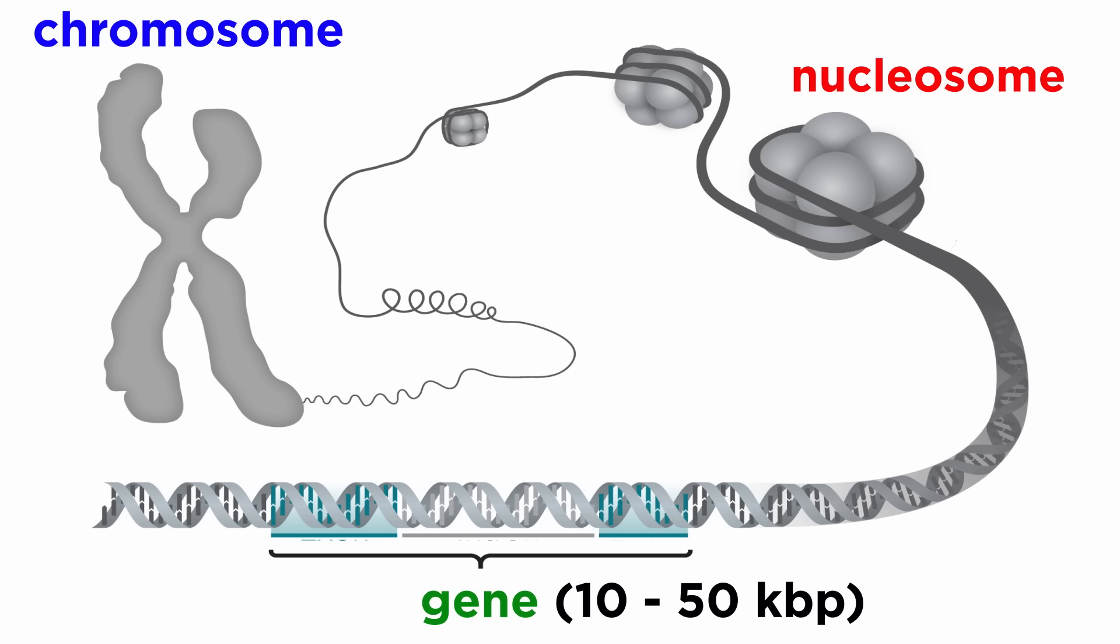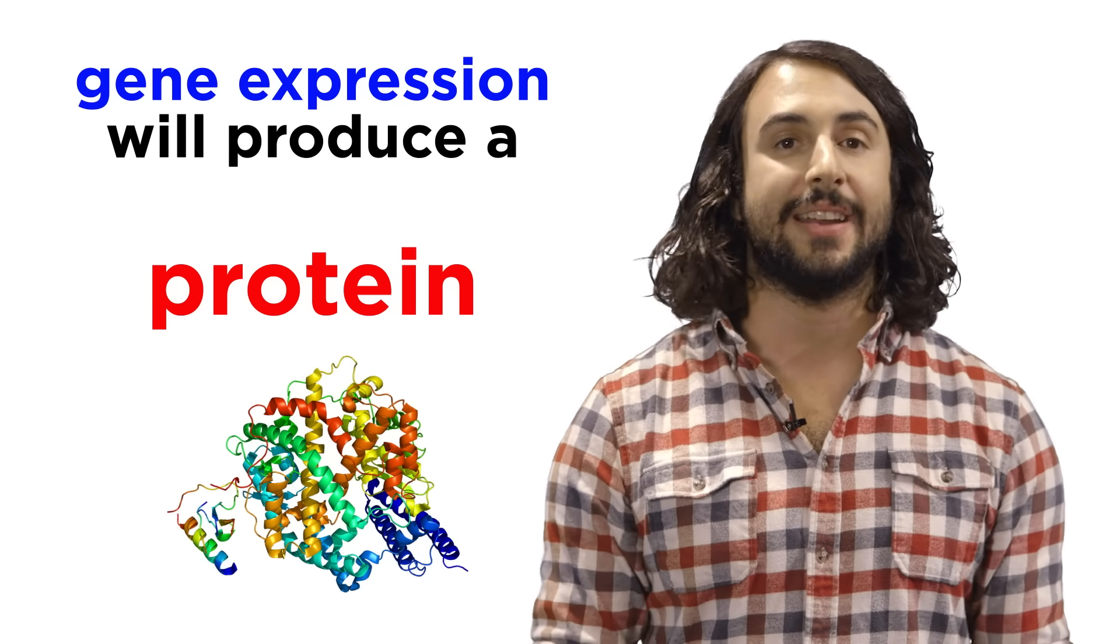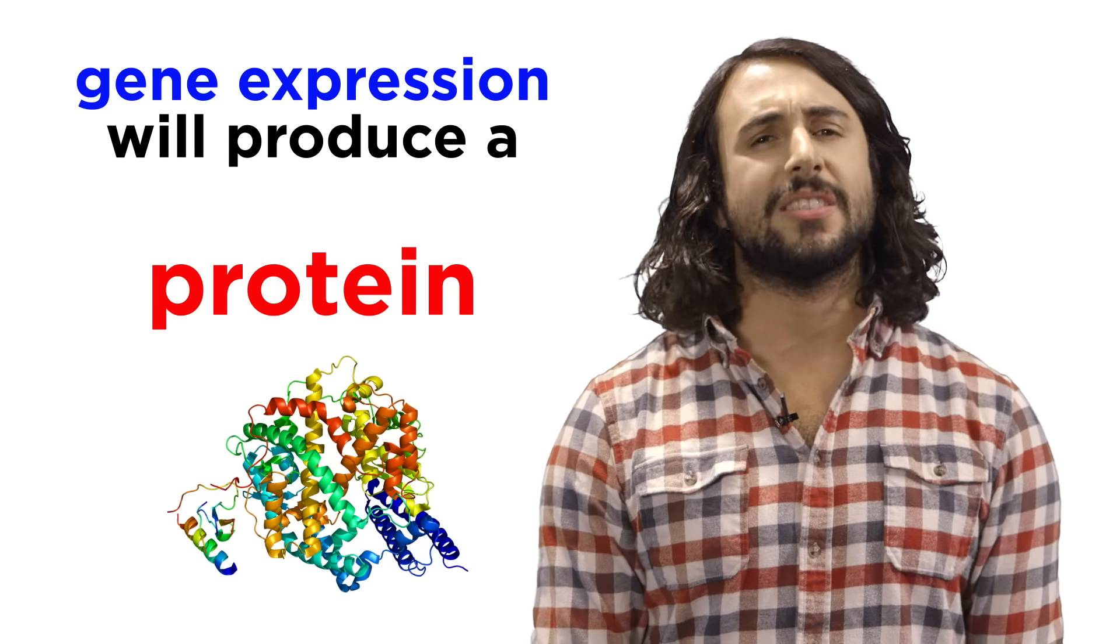These are the parts that code for different things. In a human, a gene will be on average around ten to fifty thousand base pairs long, though the longest is two and a half million base pairs. And when a gene is expressed, a specific protein is produced. So how does this work?